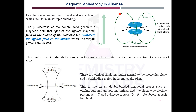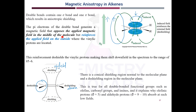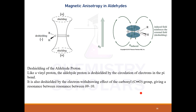Similarly for alkenes, this is the electron cloud producing ring currents and an induced magnetic field. Looking at the diagram carefully, one part is in the same direction as the applied field while the middle part is in the opposite direction. The central zone is shielded, so any proton there appears upfield, and the outer part is deshielded so any proton there appears downfield. This is due to the pi electrons circulating in the molecule.